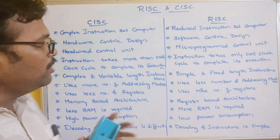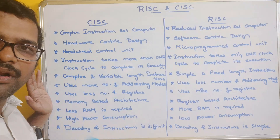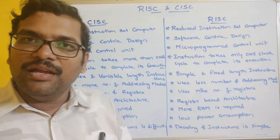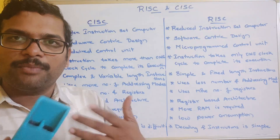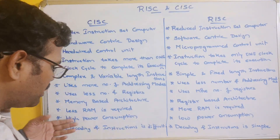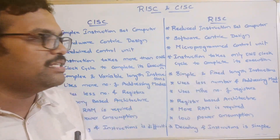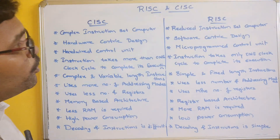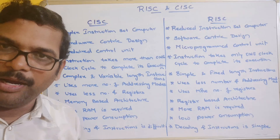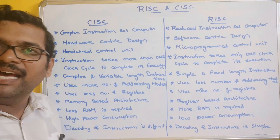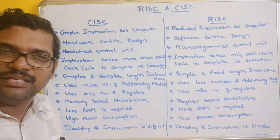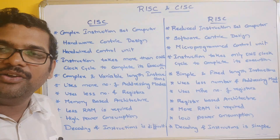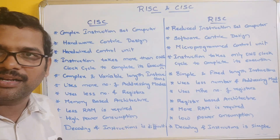In CISC, one instruction is used for load, evaluate, and store — for all kinds of operations. But in RISC, the instructions are independently designed. Based upon these instruction differences, power consumption, RAM requirements, and all other characteristics differ accordingly. Hope you enjoyed the session and now have an idea about the differences between RISC and CISC architectures. If you enjoyed, please like, share with your friends, and don't forget to subscribe to our channel. Thanks for watching.